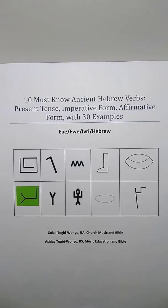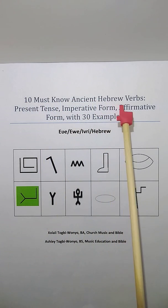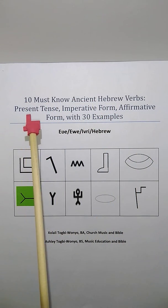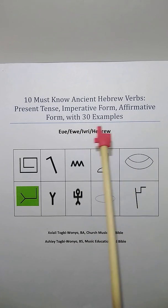All 10 lessons are coming from the booklet titled 10 Must Know Ancient Hebrew Verbs in the Present Tense Imperative Form, Affirmative Form with 30 Examples. It is available on our website, 7is3.com, in paperback hard copy or in PDF electronic file. There is a link in the description box of each video lesson should you want to own a copy, and thank you in advance.